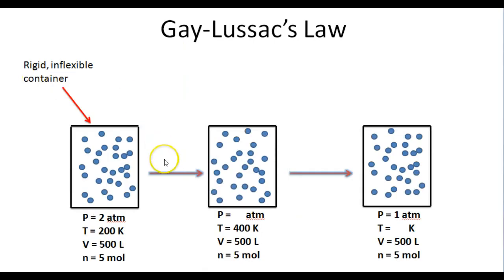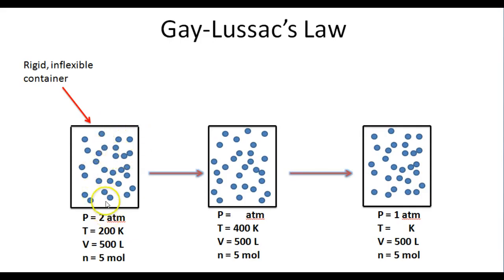In this example, we have three containers filled with a gas. Each one of these containers is filled with five moles of gas, and the volume of gas in these containers is 500 liters. Furthermore, this container is inflexible — it's a rigid container so that it cannot expand and it cannot contract. In this container, we've got a gas exerting a pressure of two atmospheres at a temperature of 200 K. In the next container, the temperature has doubled from 200 K to 400 K, and we want to know what the pressure of the gas inside this container will be.